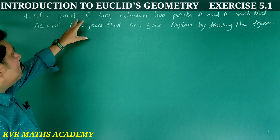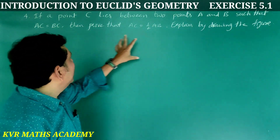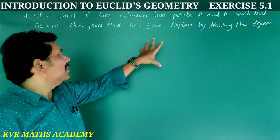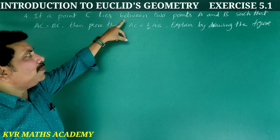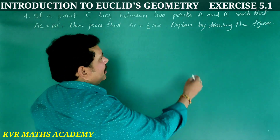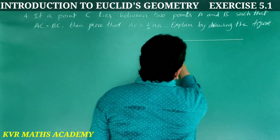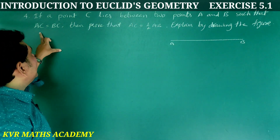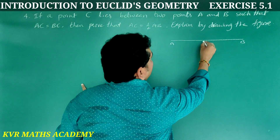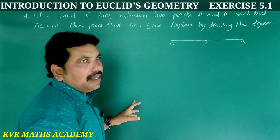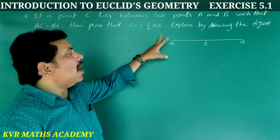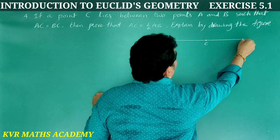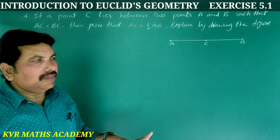Fourth question: If point C lies between two points A and B such that AC is equal to BC, then prove that AC is equal to half AB. Explain by drawing the figure. So C lies between A and B, and AC equals BC — C is the midpoint of AB. We have to prove AC is equal to half AB.